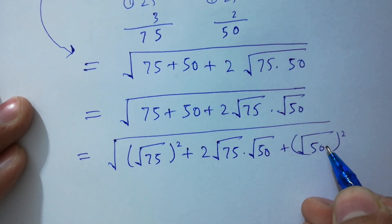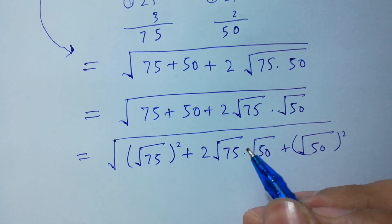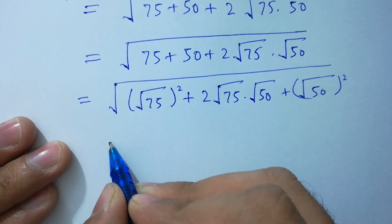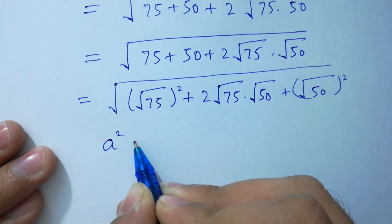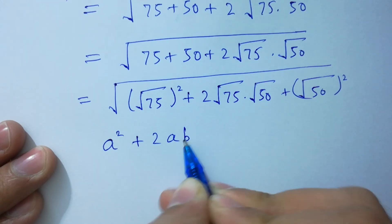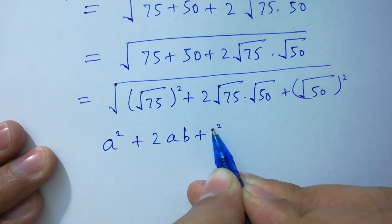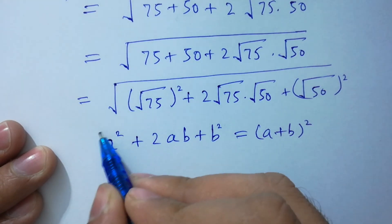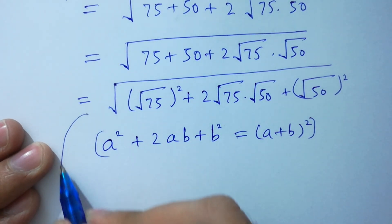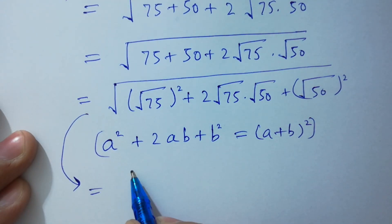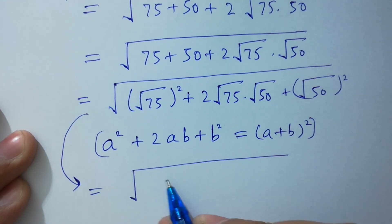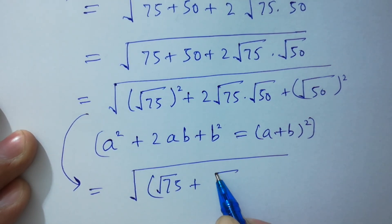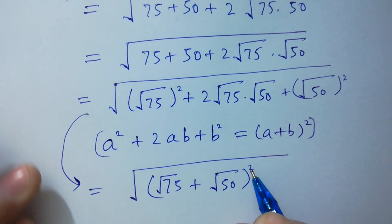Plus square root of 50 squared — the square cancels to give 50. You can see this is the formula a squared plus 2ab plus b squared, which is equal to (a plus b) whole squared. So we have square root of (square root of 75 plus square root of 50) whole squared.